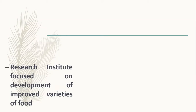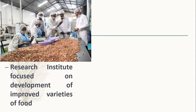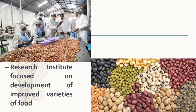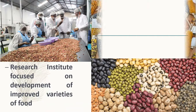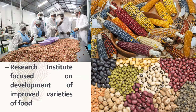There are so many research institutions established by the government in order to develop and improve the variety of our food. This improved variety comes in different colors and different quality. Before, some of our plants were perennial and some seasonal. But today, with the help of these research institutions, within one season we may grow a single plant twice or thrice.